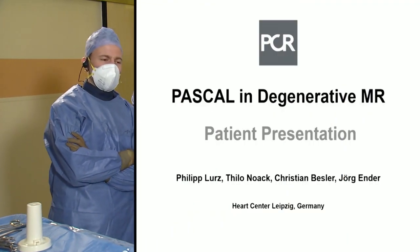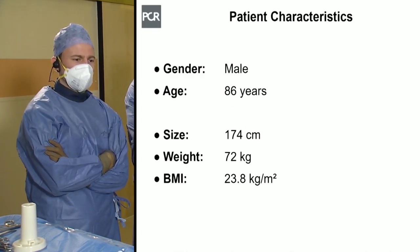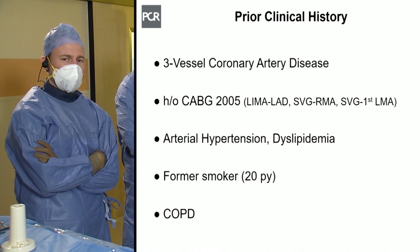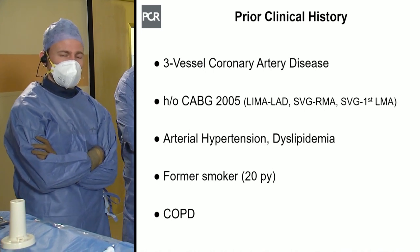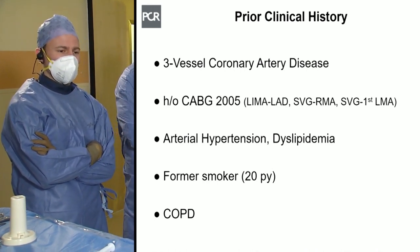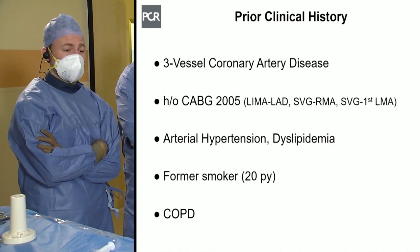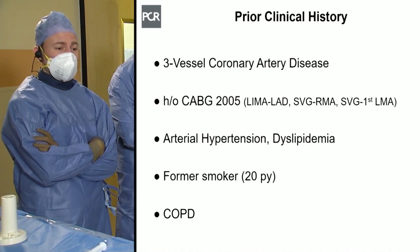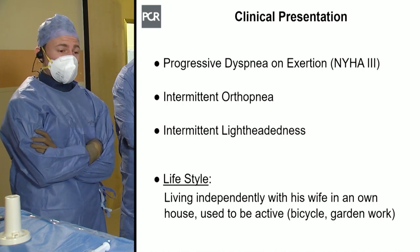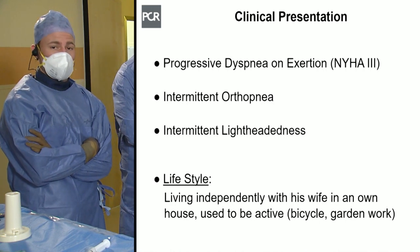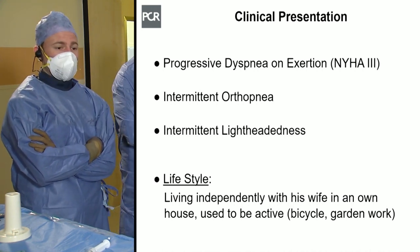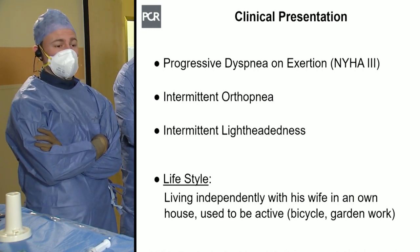The patient we are treating today is an 86-year-old gentleman with a BMI of 23.8 kg/m². He is known for three-vessel coronary artery disease and underwent coronary artery bypass grafting in 2005 with implantation of three grafts: the left internal mammary artery to the LAD and two saphenous vein grafts to the right marginal artery and the first left marginal branch. He has a profound cardiovascular risk factor profile, is a former smoker, and lung function testing showed evidence of COPD. He presented with progressive dyspnea on exertion and is currently in functional class three.